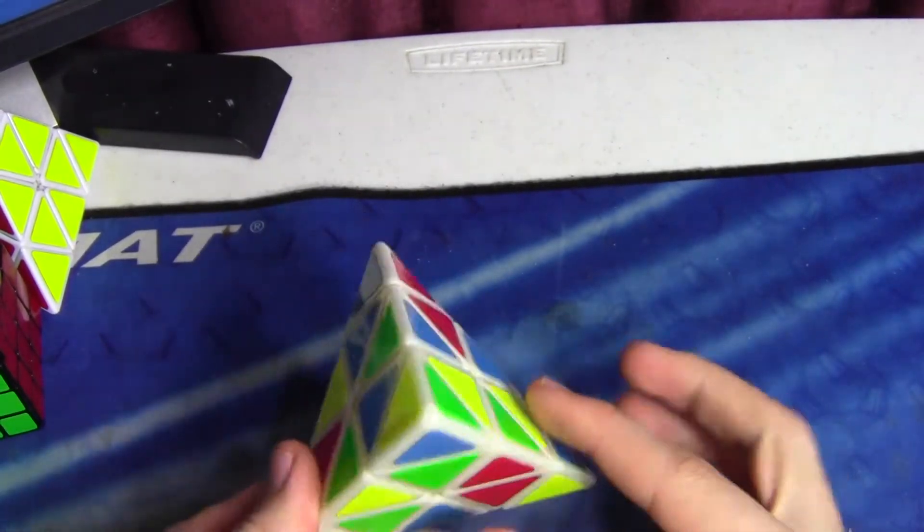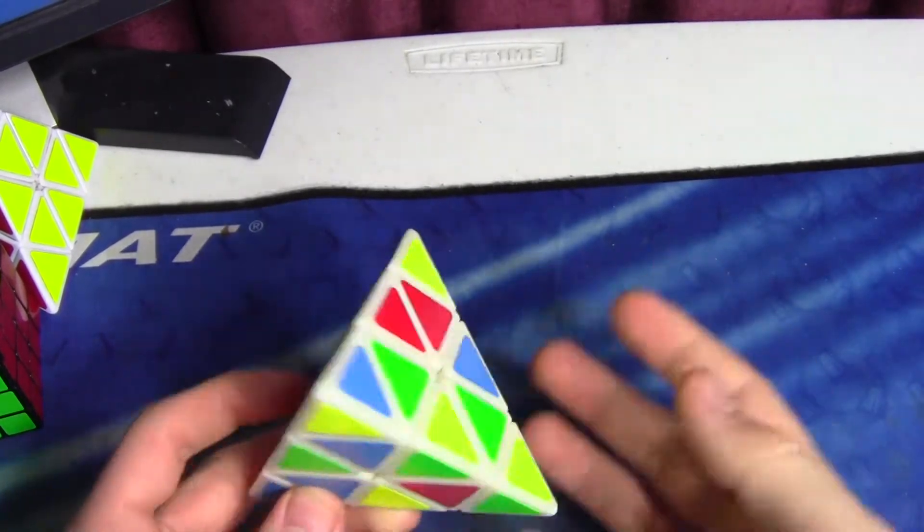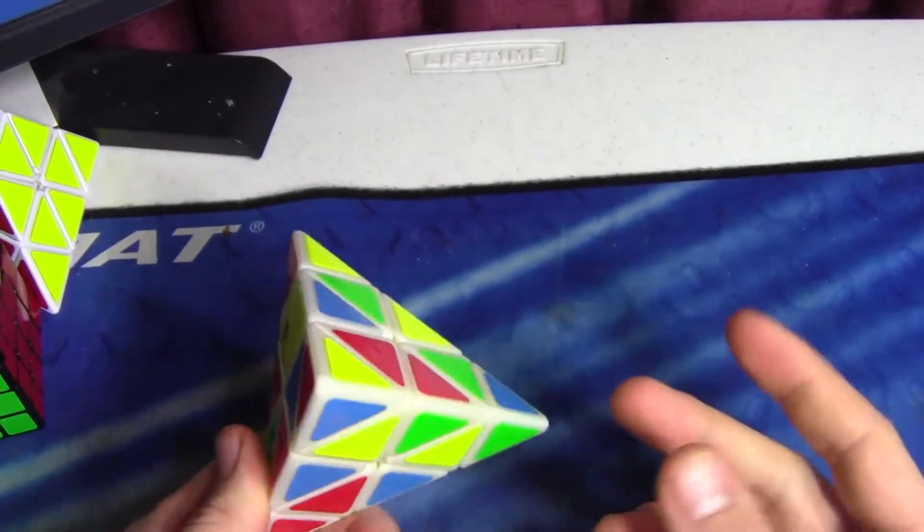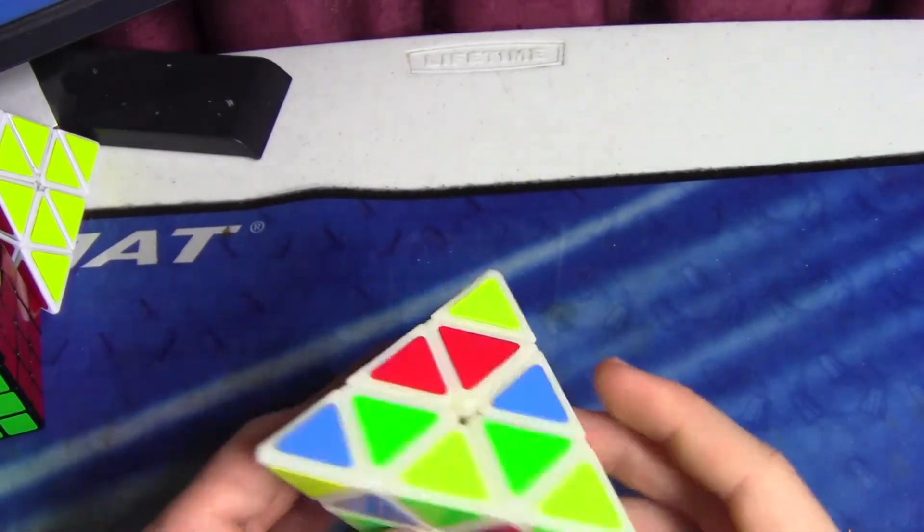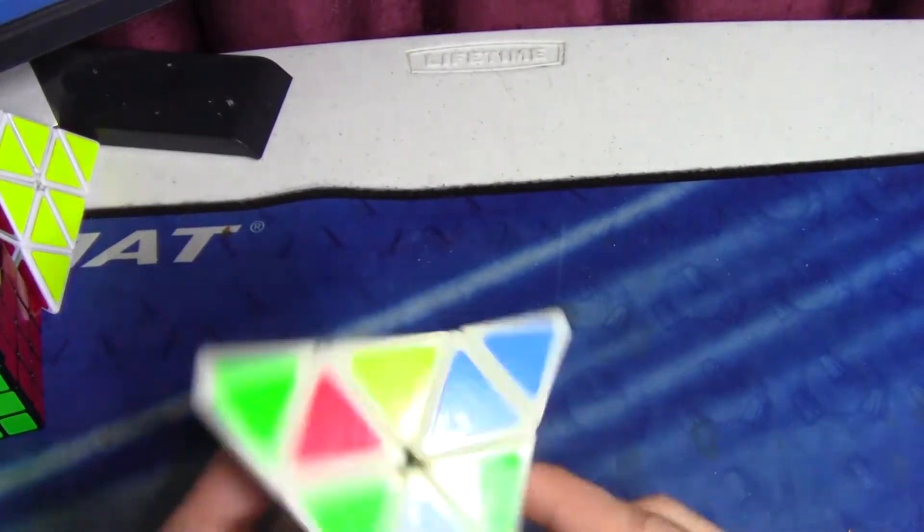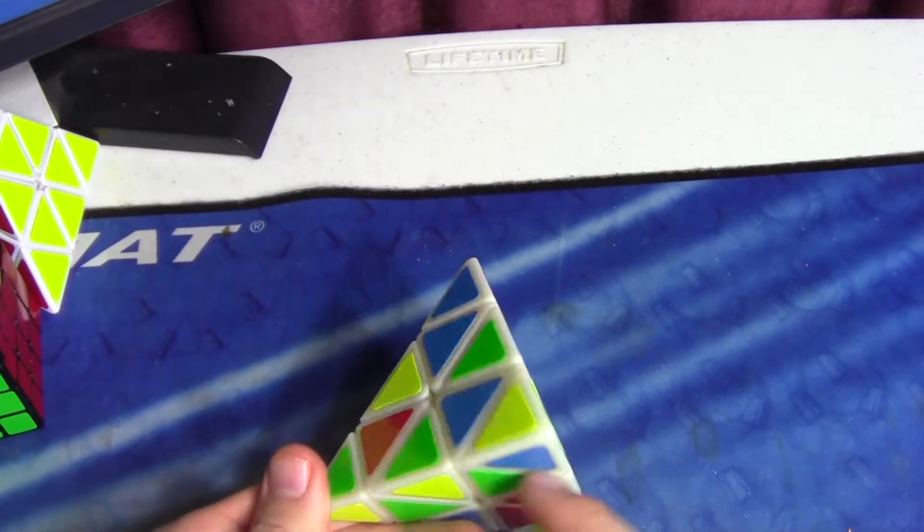This is another one that was a little confusing because everything's kind of in a bad spot for what I see. I ended up going with red because I could solve this edge in one move.